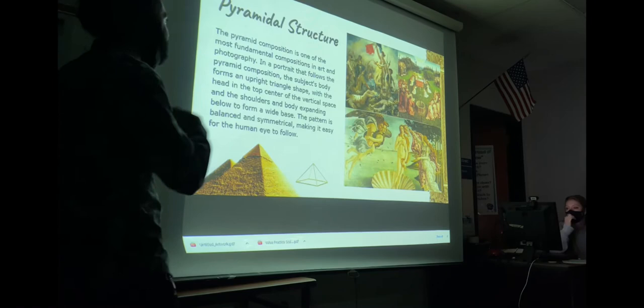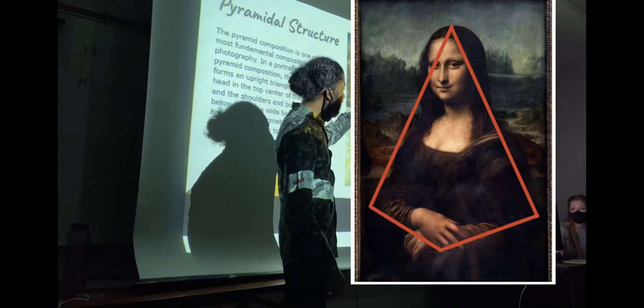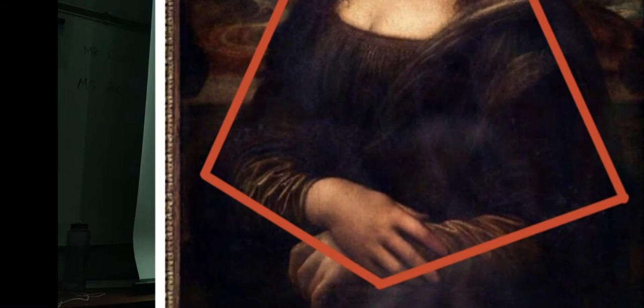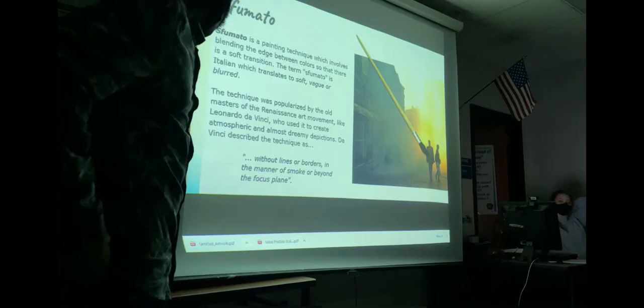One of the key compositional elements of the Mona Lisa is the pyramidal structure. Leonardo da Vinci composed this painting using a triangle form — the base is heavy at the bottom, like the base of a pyramid, and as you move up you reach the focal point, the most important part of the painting, which sits at the very tip top of the pyramid.